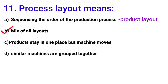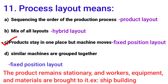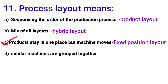Option B — mix of all layouts — means hybrid layout. Option C — products stay in one place but machines move — that is fixed position layout. For example, in shipbuilding the ship stays in place and workers bring tools to it. Option D — similar machines are grouped together — that is process layout. So the answer is option D.